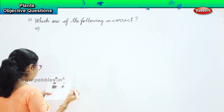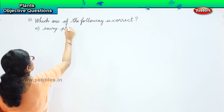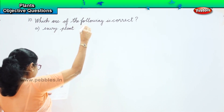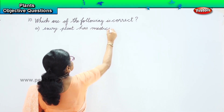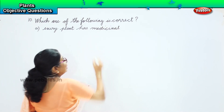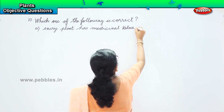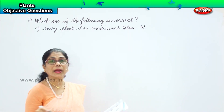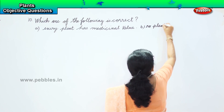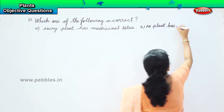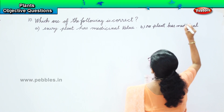Option A: every plant has medicinal value. Option B: no plant has medicinal value.